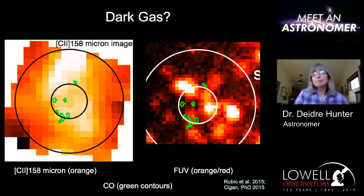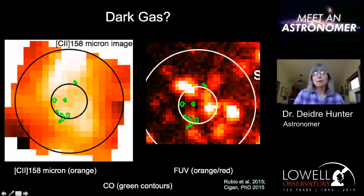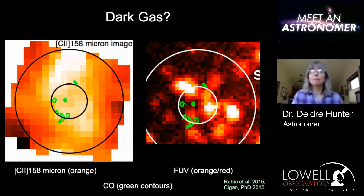Dark gas has nothing to do with dark matter or dark energy or any of the other dark things that astronomers like to talk about. This is dark gas, meaning we know what it is — it is molecular hydrogen — but it isn't traced by CO. So it's there, but we don't have any way of seeing it even indirectly, at least not with CO. This could become very important in understanding how dwarf irregular galaxies form stars.